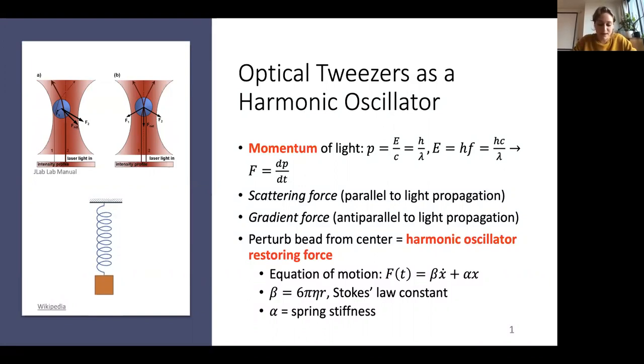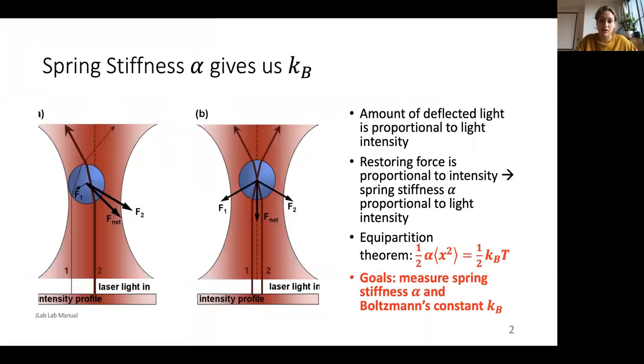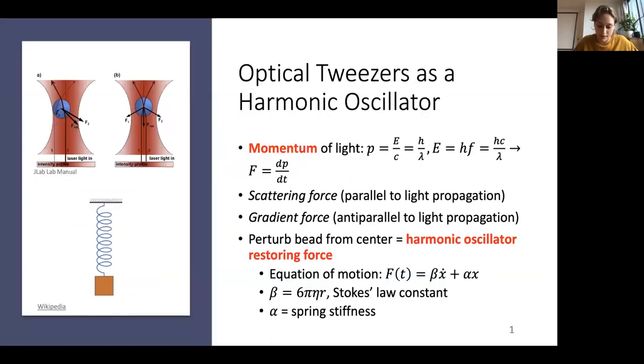If we want to trap a bead between two opposing laser beams, as is the goal of this experiment, we need to ensure that these two forces cancel. And Arthur Ashkin in 1970 discovered the mechanics of these so-called optical tweezers. And since the lasers trap the bead, if you pull the bead away from equilibrium, the forces will restore it to the center. So the system acts as a harmonic oscillator.